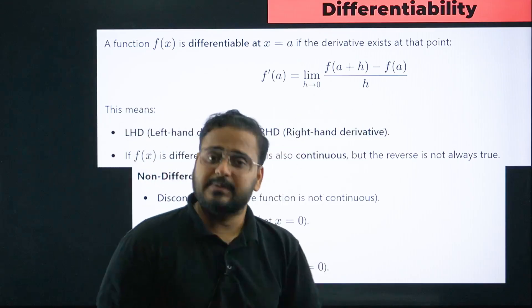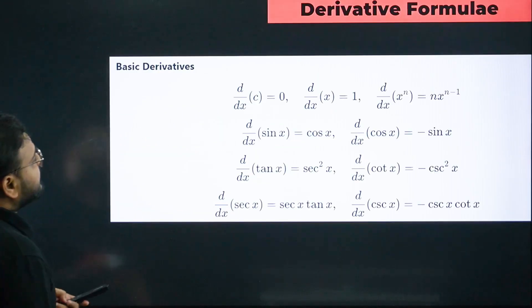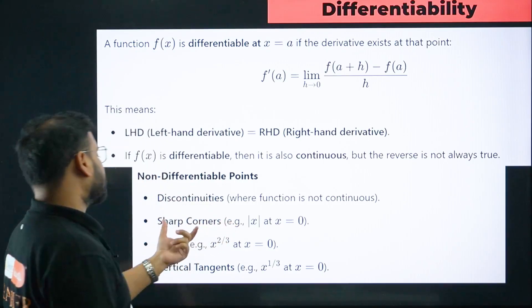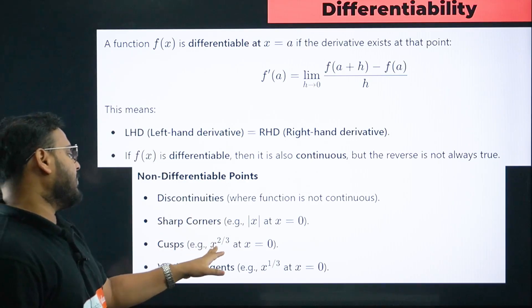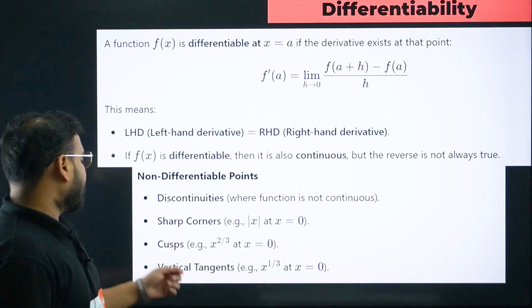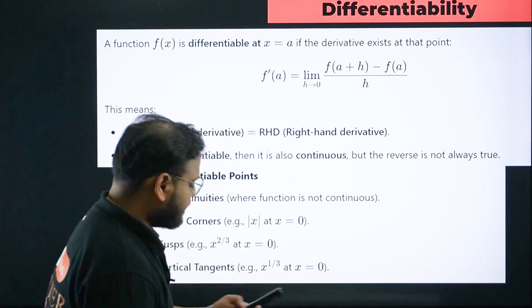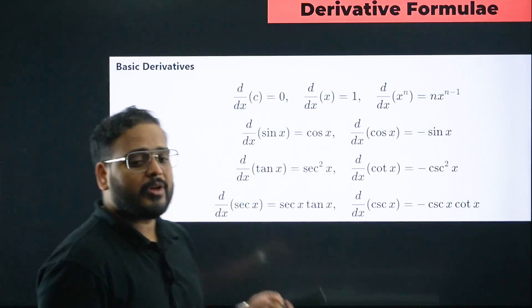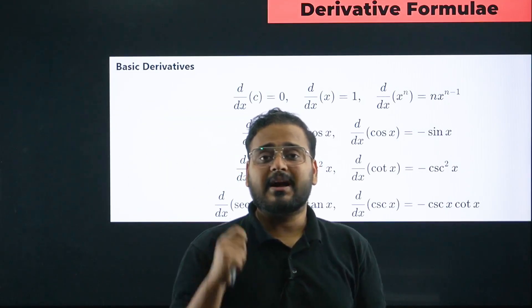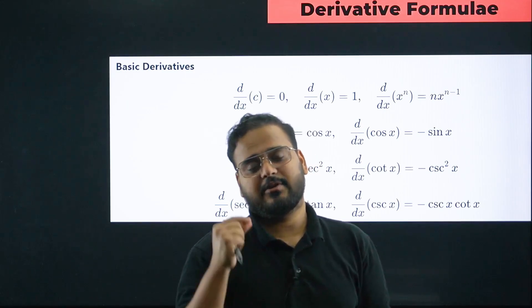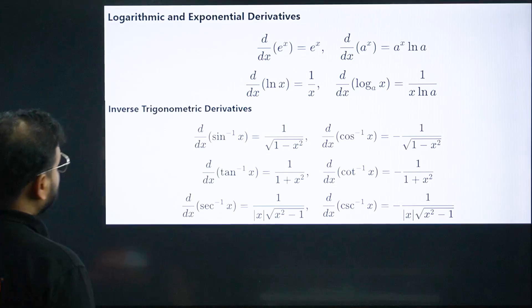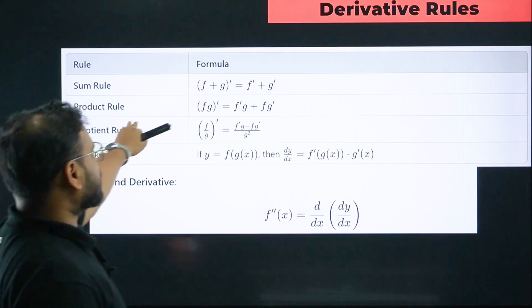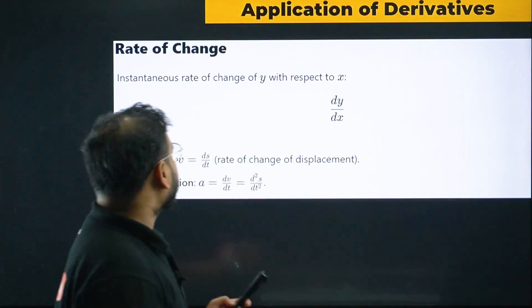If a function is discontinuous, it is automatically non-differentiable. Other cases of non-differentiability: sharp corners, curves like x^(2/3) at x = 0, and vertical tangents. Please memorize the standard derivative formulas — it's not about just knowing them but having them by heart. For quotient rule and product rule, I've also given short tricks in the tricks video — please watch that. Increasing and decreasing function is also a highly important topic.